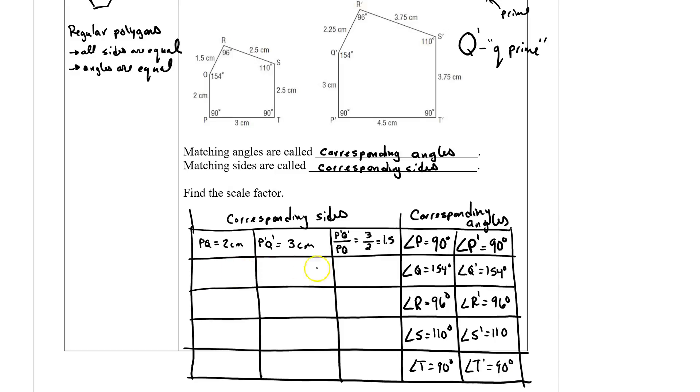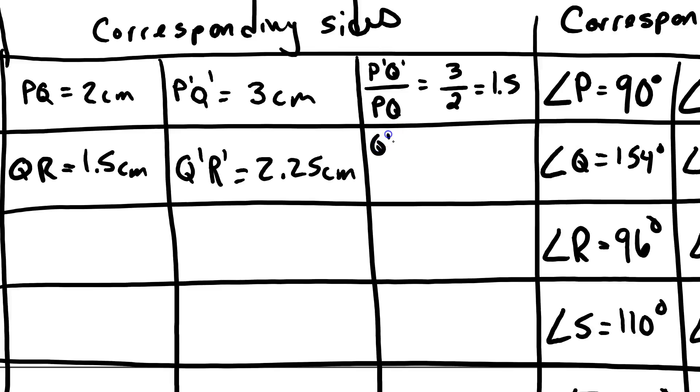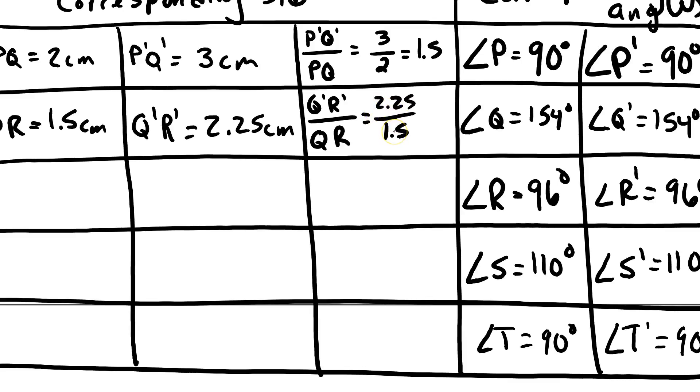So I'm going to do one more of the corresponding sides with you. And then I want you to fill in the remaining three rows. So if I would say QR, QR is 1.5 centimeters. Q prime R prime is 2.25 centimeters. Now if we were to define the scale factor of this, I'm going to say Q prime R prime divided by the length of QR. That's 2.25 over 1.5. And when I divide 2.25 divided by 1.5, I get 1.5.